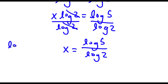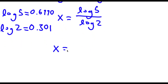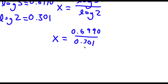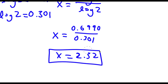Now the value of log 5 is equal to 0.6990, and the value of log 2 is equal to 0.301. So now I have x is equal to 0.6990 over 0.301. And if I divide these two, I get x is equal to 2.32. So this is my answer.